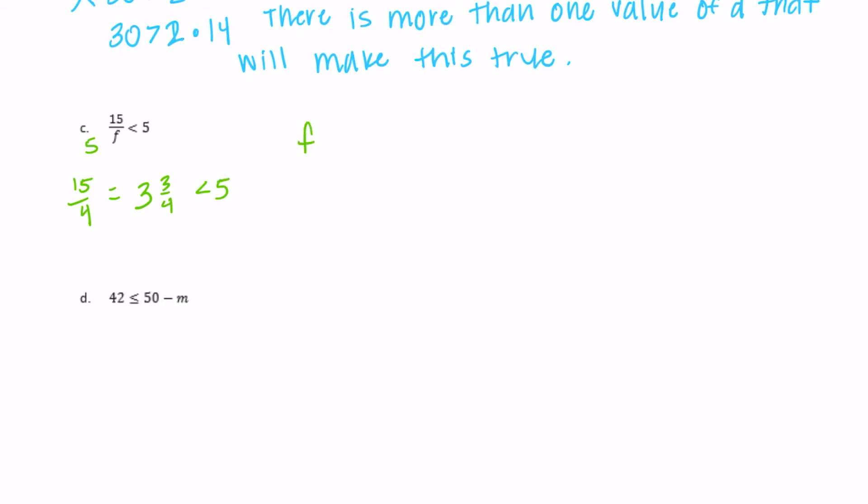So it looks like F needs to be less than, or sorry, it needs to be greater than 3. So as long as it could be 3 and a third, it could be 4, it could be 27. As long as F is greater than 3, it will be true. So there's more than one value. There is more than one value of F that will make this true.